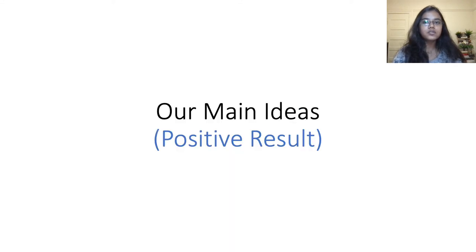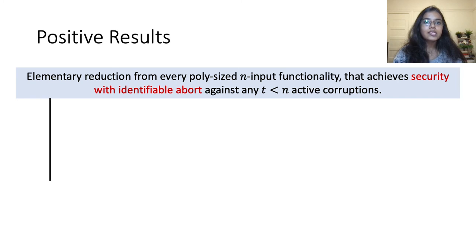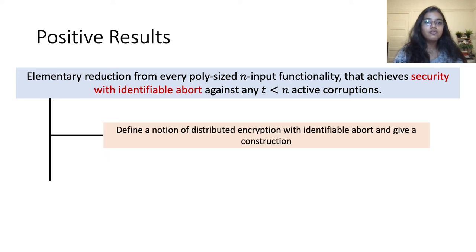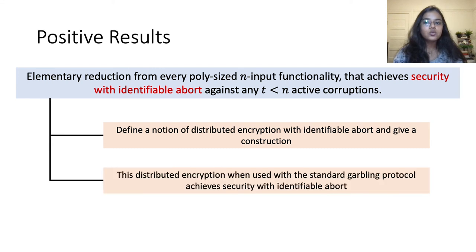Moving on to our positive result, we show that there exists an elementary reduction with identifiable abort against a dishonest majority of parties for all efficiently computable functions. To construct such a reduction, we first define a notion of distributed encryption with identifiable abort and propose a construction of such a scheme. We then show that this distributed encryption, when combined with the standard garbling protocol, achieves security with abort.